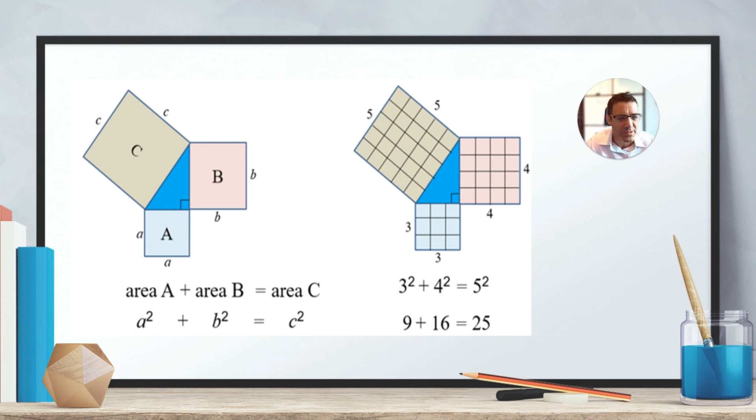And you can see with numbers here, for example, with the 3-4-5 triangle, that 3 times 3 is 9, 4 times 4 is 16, and when you do 16 plus 9, you get 25, and 25 would be the area of a 5 by 5 square.